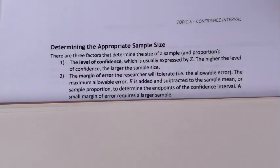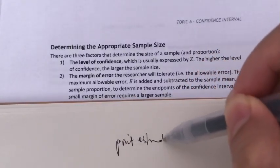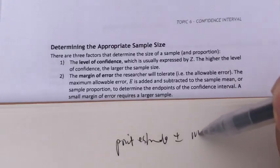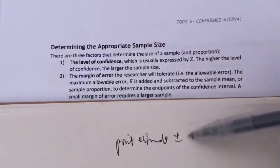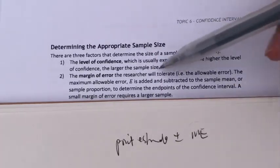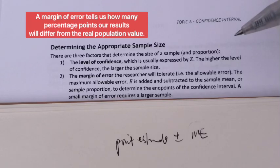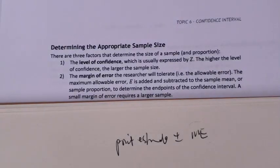You may have remembered when we want to calculate the confidence interval for mu or pi, the formula is point estimate plus minus margin of error. So what is this margin of error? It's basically the amount of error that we, the researchers, are willing to tolerate. Because in practice, it is very unlikely for something to be absolutely perfect or absolutely void of error.